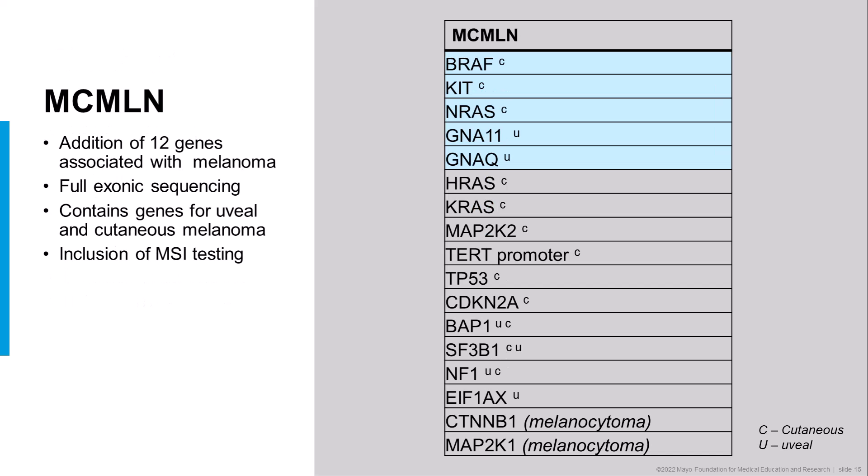This is our melanoma panel. It had just five genes, shown here, and we've added an additional 12 genes. This panel is useful for patients that have cutaneous melanoma or uveal melanoma, and additionally these rare tumors referred to as melanocytoma. The genes useful for cutaneous melanoma are shown with a superscript C after them, the ones useful for uveal melanoma are shown with a U after the gene name, and there are a few useful for both, such as BAP1 and SF3B1.